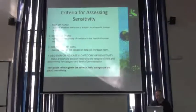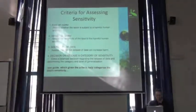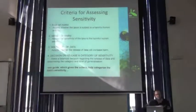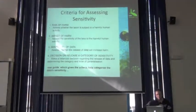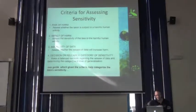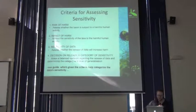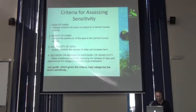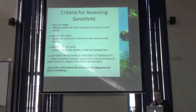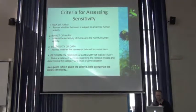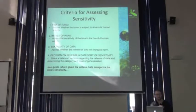What are some of the criteria for assessing sensitivity? First, the risk of harm — assessing whether the taxon is subject to a harmful human activity. For example, white rhinoceros in South Africa are being poached near to extinction right now, so there is a huge risk of harm by humans. Second, the impact of harm — assess the sensitivity of the taxon to the harmful human activity. Third, sensitivity of the data — assess whether the release of data could increase risk. Fourth, decision on releasing the sensitivity category, taking all these considerations into account.